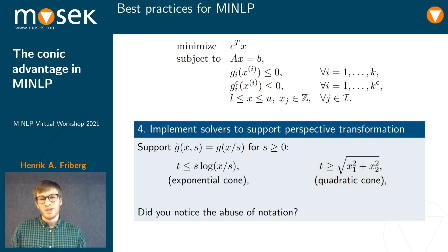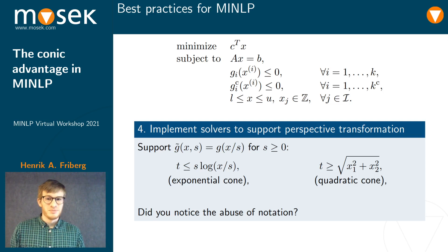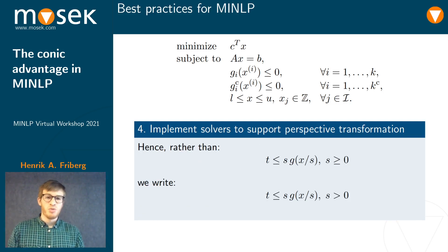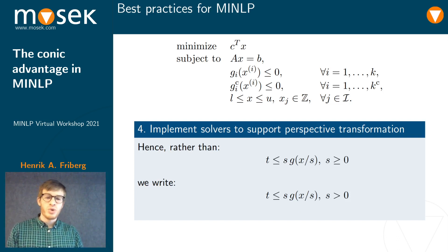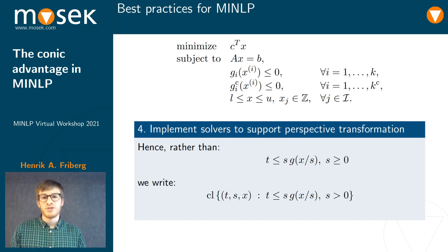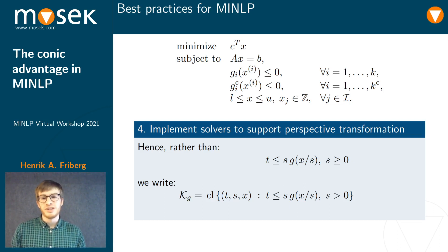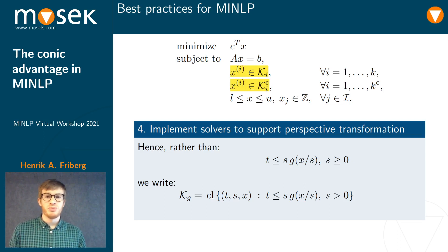You probably noticed the abuse of notation here, because it's not well-defined to divide by 0. So rather than writing the functional form for a scaling factor greater than or equal to 0, I'm going to write it for a scaling factor greater than 0 – this is well-defined. I'll then put it in a set and take the closure so the set becomes defined for S = 0. This is the proper way of writing it, and since it's a set, we can give it an appropriate name and use set-membership notation in our standard formulation.